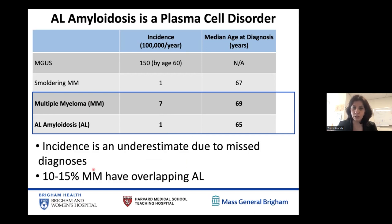It's also important to recognize that the plasma cell cancer multiple myeloma and AL amyloidosis can overlap in about 10 to 15% of patients. Patients with myeloma, over time during their lifetime, may present with symptoms and signs consistent with the deposition of amyloid in target organs.